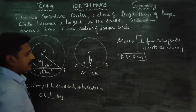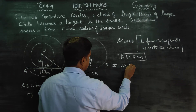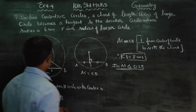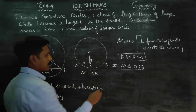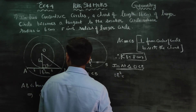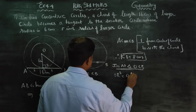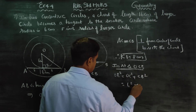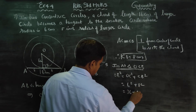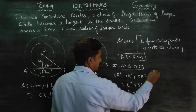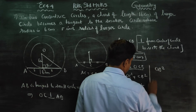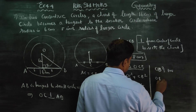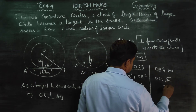In right triangle OCB: OB squared is equal to OC squared plus CB squared. That is 6 squared plus 8 squared, which is 36 plus 64. OB squared is equal to 100. OB is equal to the square root of 100, which is 10.